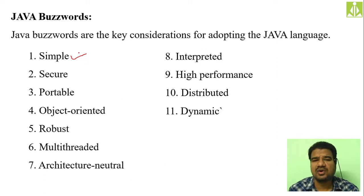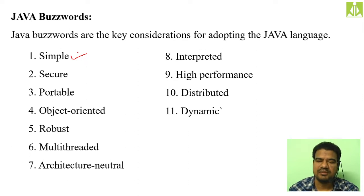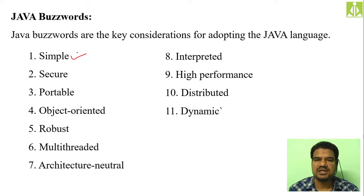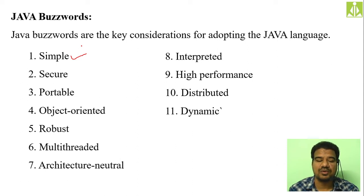Then we have 'secure' — there are many reasons why we can call Java a secure programming language. One such reason is because we have classes and the concept of encapsulation. Using encapsulation we can bind or protect the data from unauthorized access. That is majorly one of the reasons to call Java a secure programming language, and there are plenty of other reasons.